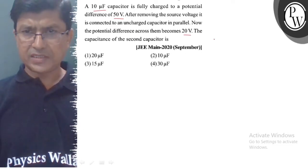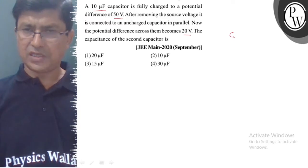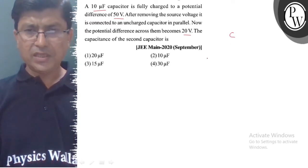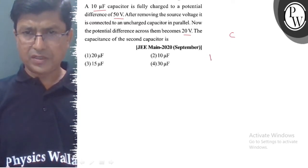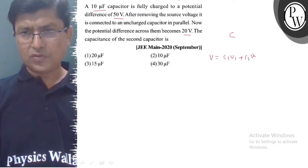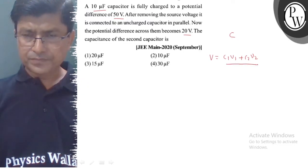We assume that the second capacitor's capacitance is C. The common potential V is equal to C1V1 plus C2V2 upon C1 plus C2.